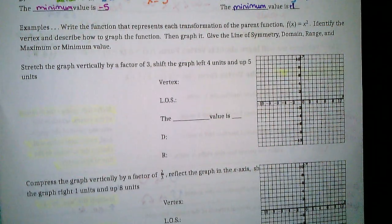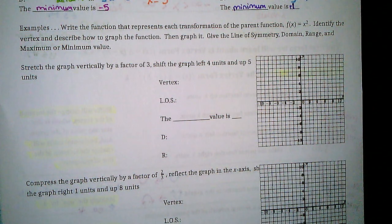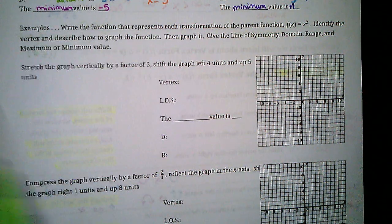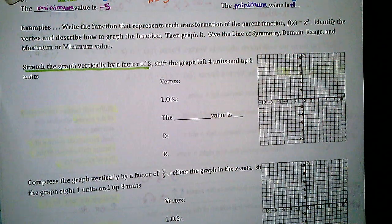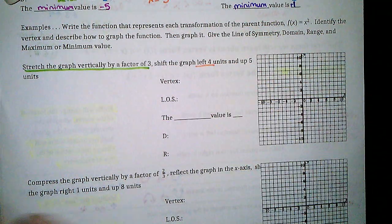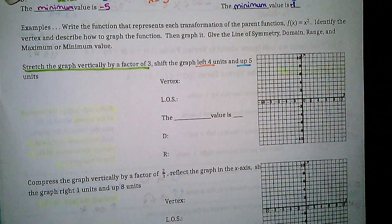Next problem: write the function that represents each transformation, identify the vertex, describe how to graph, graph it, give the line of symmetry, domain, range, and minimum or maximum value. I have a vertical stretch by a factor of 3, a shift left 4, and a shift up 5. We've got a lot going on.